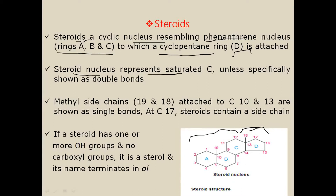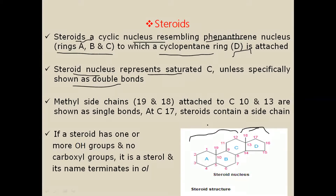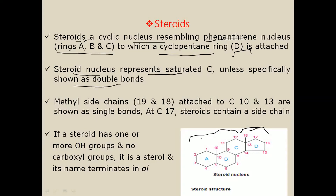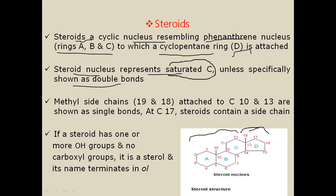The steroid nucleus represents saturated carbons unless specifically shown as double bonds. Carbons one, two, three, four represent saturated carbons, meaning there is no double bond between carbon atoms. If a double bond is present, it will be specifically shown.